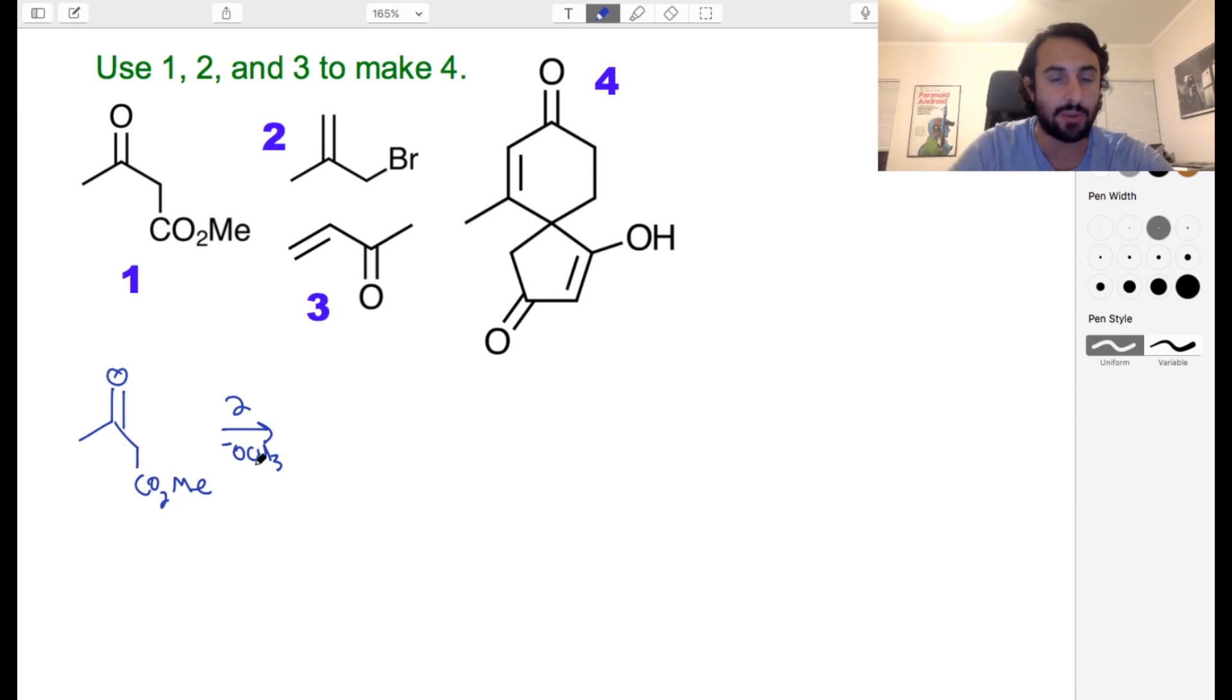We're used to enolate attacking carbonyls, however they can also do SN2 on alkyl halides. The enolate is going to form there - this is probably why we're going to start with this, because this carbon is adjacent to two carbonyls, so it is certainly the easiest spot to enolize out of all these molecules.